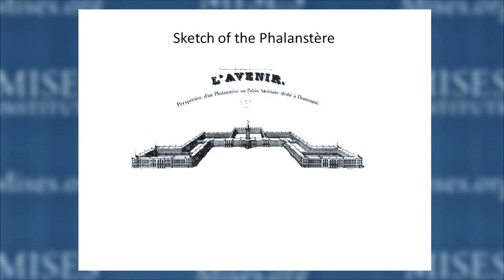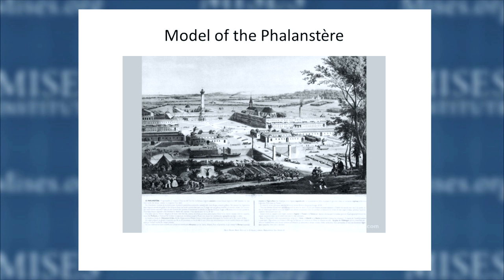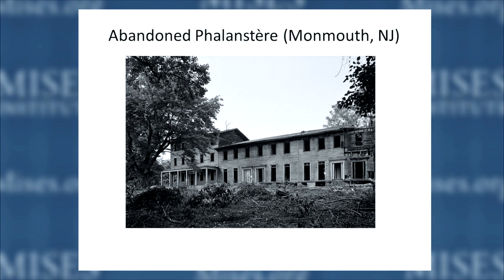That's a drawing of it. Now, these guys all liked symmetry — they thought symmetry should be everywhere, so this sketch is very symmetrical. Here's a model of it. Here's the grim reality — that's near my house, actually. That's an abandoned phalanstery. A few were set up in the United States. It's pretty scary. Needless to say, all these plans failed. At the same time, the classical economists showed there were real problems, even though they hadn't yet developed Mises' critique of socialism.